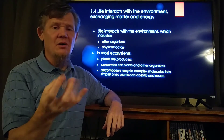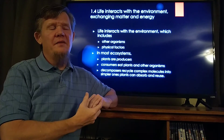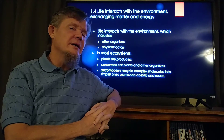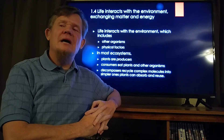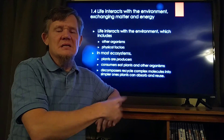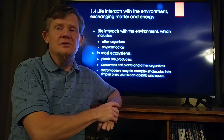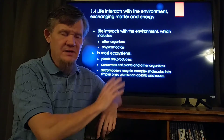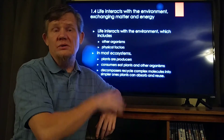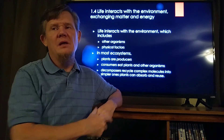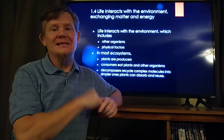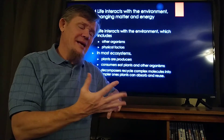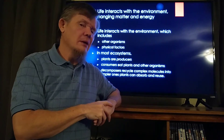Every ecosystem has to have at least producers and decomposers. Most ecosystems also have consumers. That tree living its whole life without getting eaten — is that realistic? Not really. You can walk through a forest and see holes in leaves where bugs have eaten, half-eaten pears or pecans under trees where squirrels have chewed on them. Animals are constantly eating plants, and animals are consumers — the primary consumers.